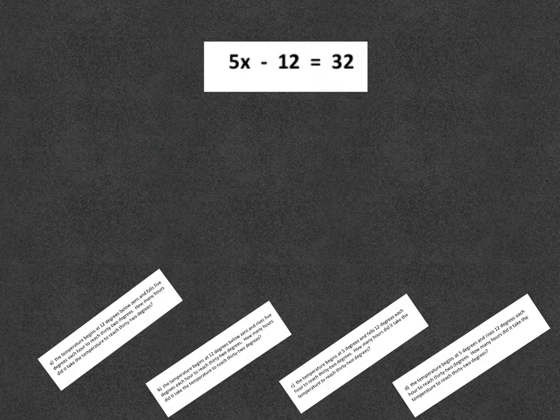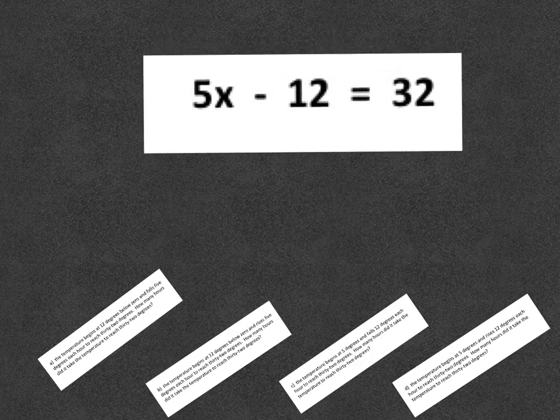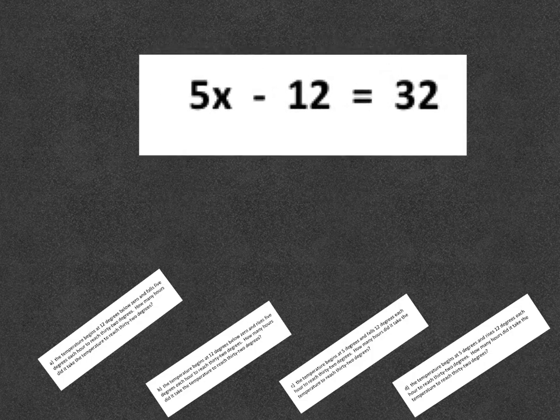So here's an equation we're going to look at. It says 5x minus 12 equals 32.